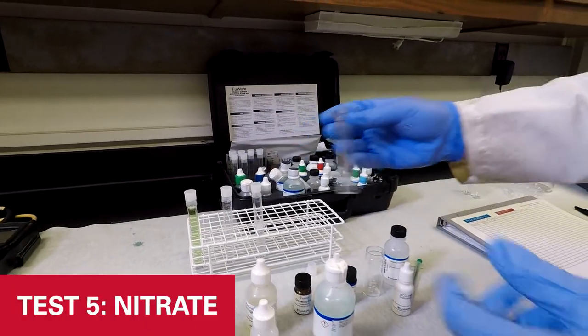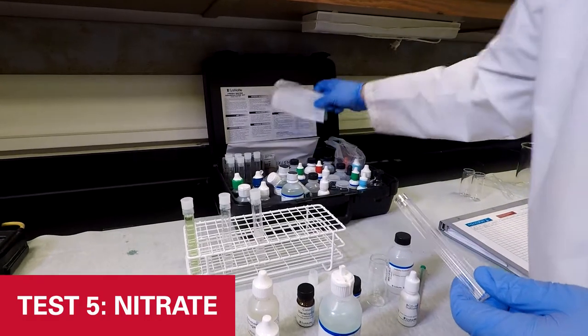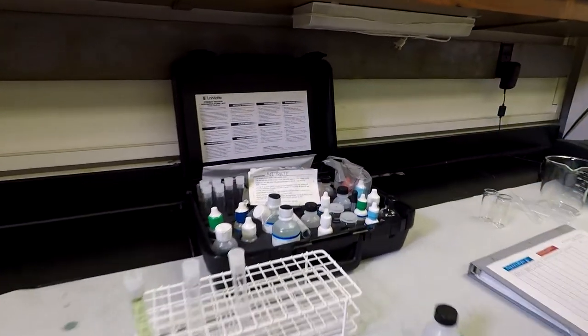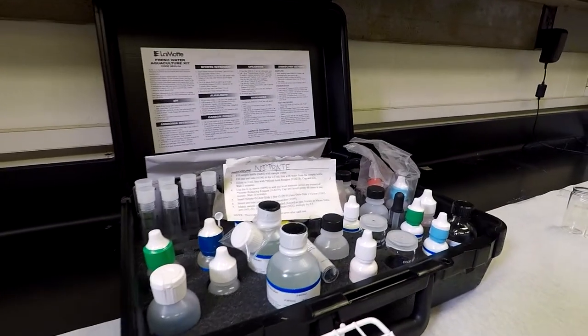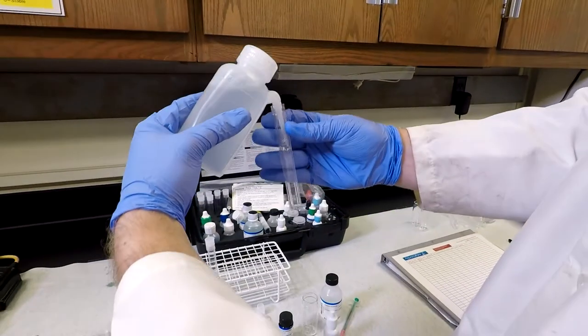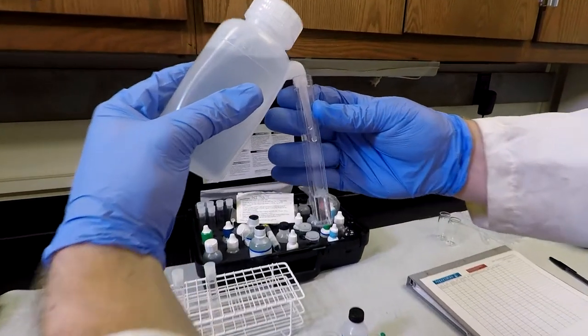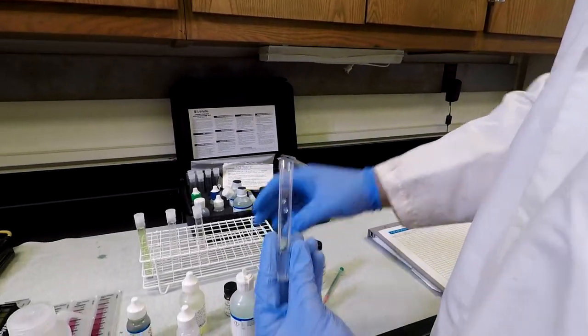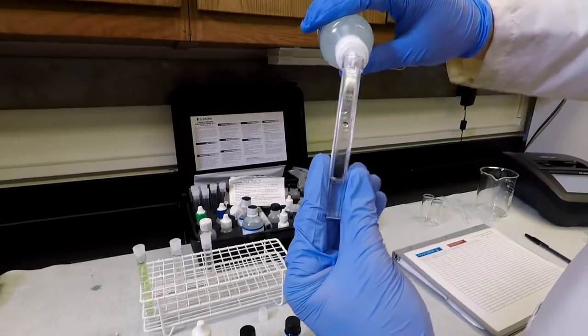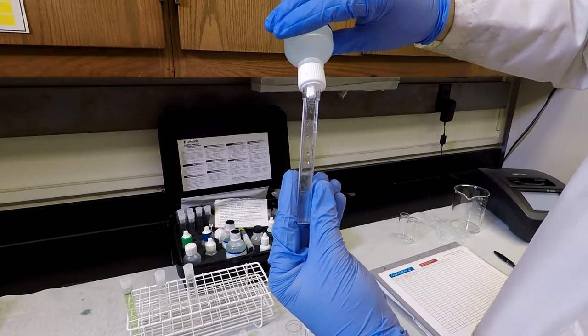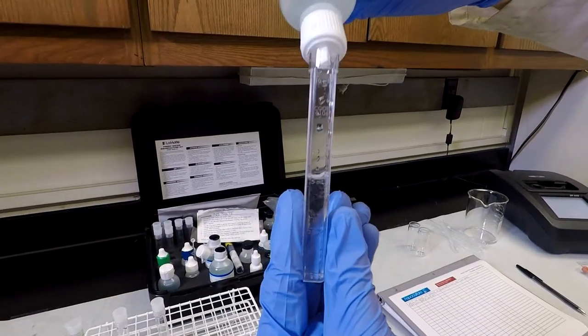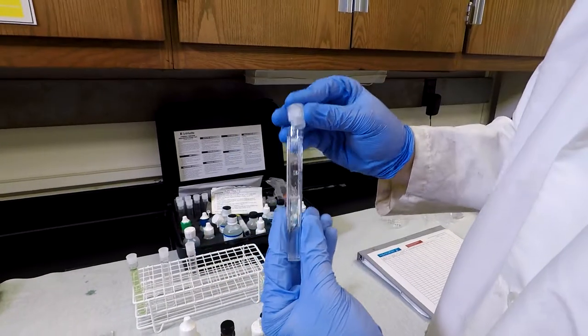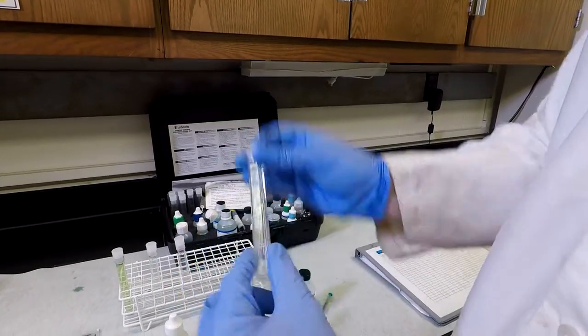Our next step is we're going to do nitrate. Our instructions for nitrate are here, very similar to the instructions for nitrite. So I'm going to fill this sample to the 2.5 milliliter mark. The next step is to add our mixed acid reagent and fill it to 5 milliliters. Once we have this, put our cap on, mix that.